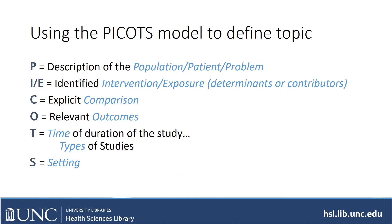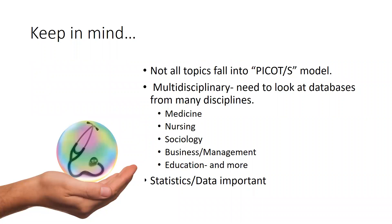Sometimes you'll have a T or an S — they're not always in every search. T might be time or duration, such as over a two-year period, or types of studies like randomized controlled trials. S, your setting, might be in schools or nursing homes. Keep in mind that not all topics in your discipline will fall into the PECOTS model — it really works well with strictly medical topics, but many times we have to look at databases for many disciplines: not just medicine, but also nursing, sociology, business, education, and psychology. If it doesn't seem to work in this model, that's okay. You just want to figure out what the sub-components of your topic are.